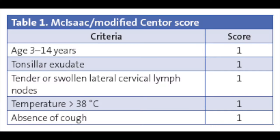Next is Centor criteria for strep pharyngitis. C stands for no cough, E stands for exudates, N stands for nodes as in anterior cervical lymph nodes, T stands for temperature if they're febrile. O is for age — if it's less than 14 years old you add one point, and if it's greater than 44 years old you minus one point. If the score is 4 or more you treat empirically with penicillin, and if it's 2 to 3 you do a rapid strep test. The exception is that in kids you still need to do a rapid strep test no matter what.